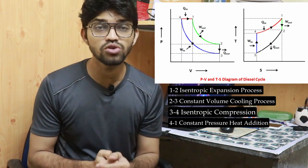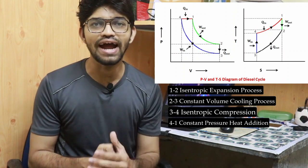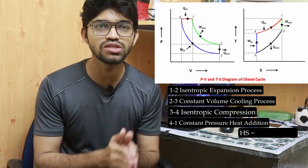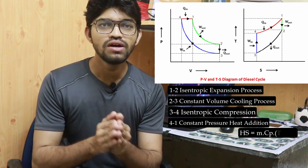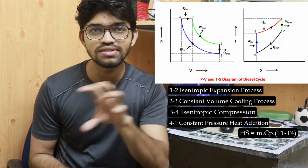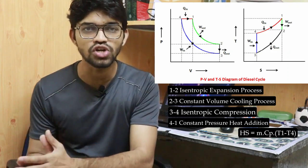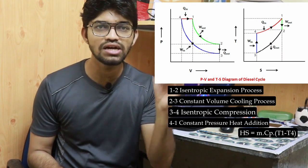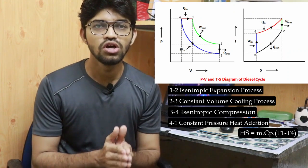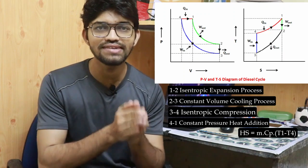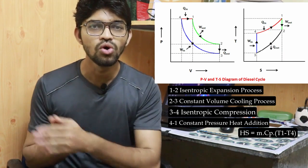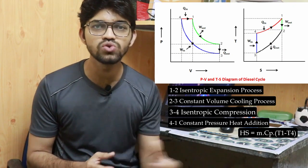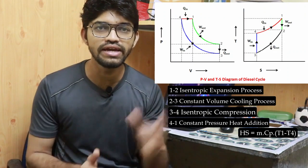During process four to one, heat is added as fuel is injected into the engine cylinder. The heat supplied can be calculated using the formula: Q_supplied = m · cp · (T1 - T4), where cp is the specific heat at constant pressure, since process four to one is the constant pressure heat addition process.